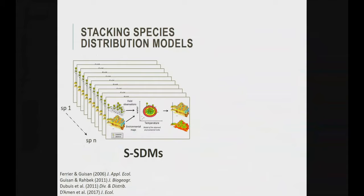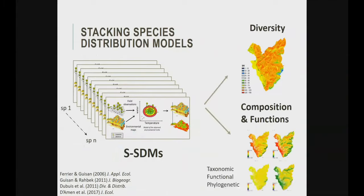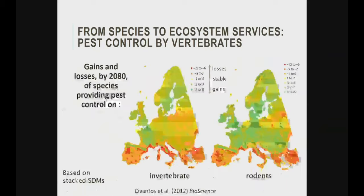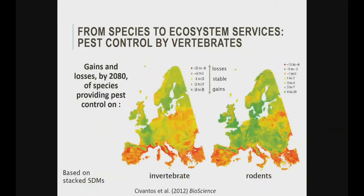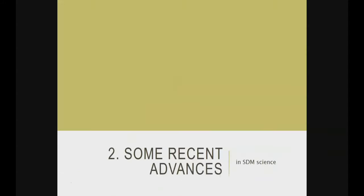When you build species distribution models, it has become very common to stack them to predict properties such as diversity, composition, and functions, and from that, predict ecosystems and ecosystem services. One example using stacked SDMs to predict ecosystem services is a paper led by Miguel Araujo, trying to anticipate how vertebrate control of invertebrate and rodent pests will change with climate change — modeling the mammals that provide control and showing how cumulatively this will shift in the future.